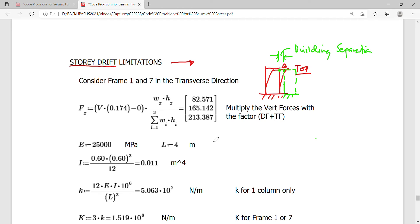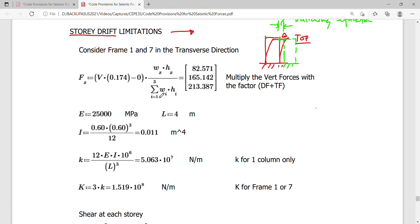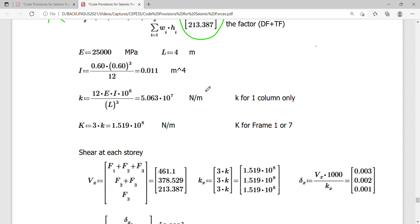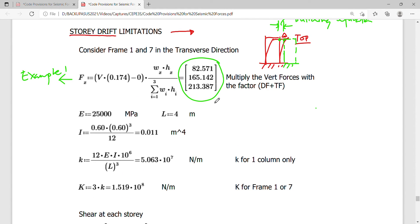To give you an idea on how this story drift limitation is done, we need to find first the vertical distribution of forces, which I referred to in the first example from my previous videos. This is example one. I computed the forces and these forces I'm going to use to solve the static deflection.